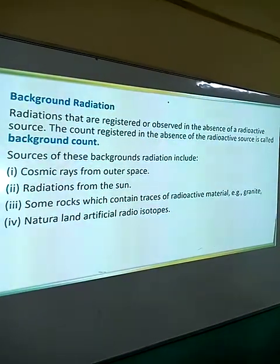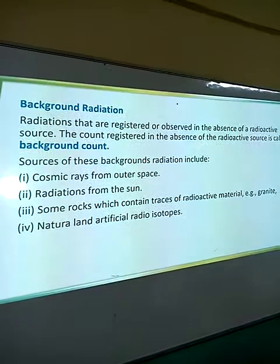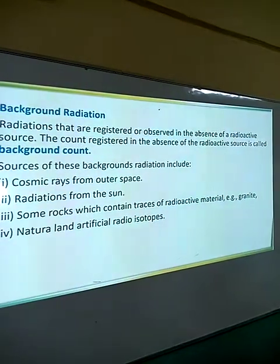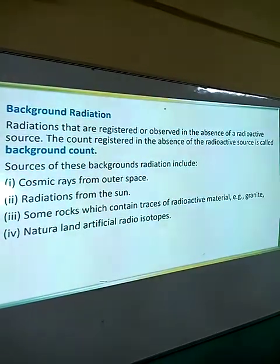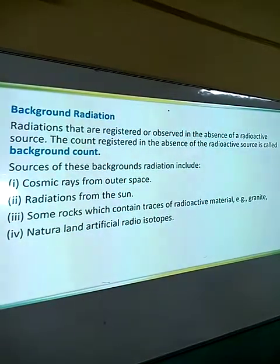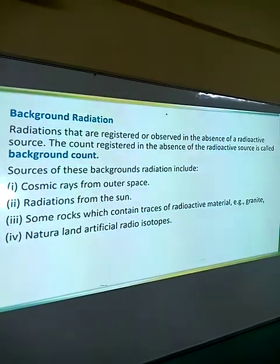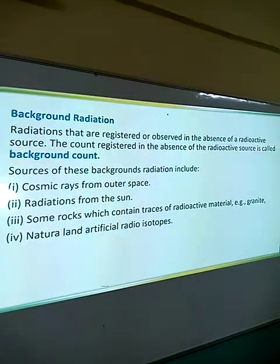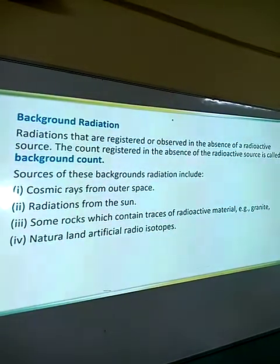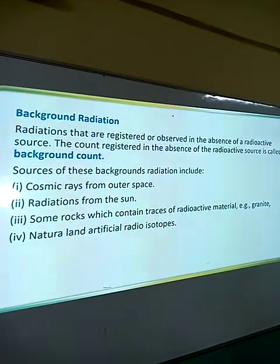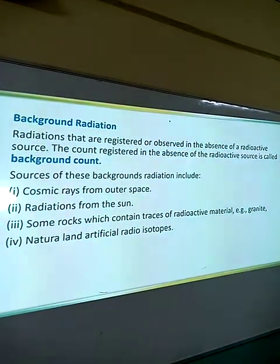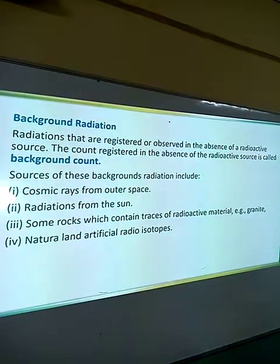Looking at background radiation — this also refers to the GM tube. Sometimes, before you introduce a radioactive material near the mica window, the scalar or rate meter will still record some value. The radiation registered in the absence of a radioactive source is called background radiation. The count registered in the absence of a radioactive substance is called the background count.